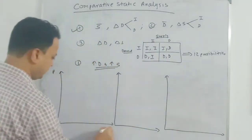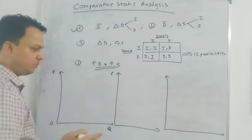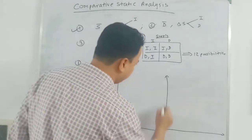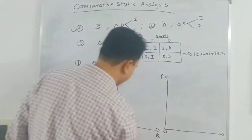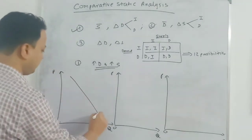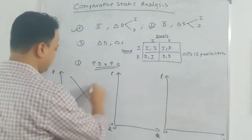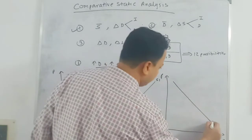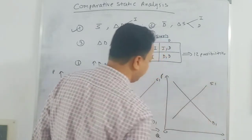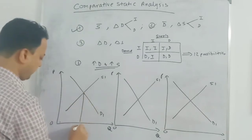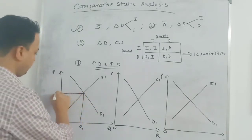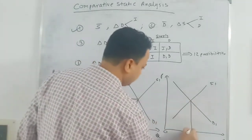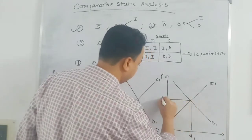Again, drawing the axes: price on the vertical, quantity on the horizontal. D1 is my initial demand, S1 is my initial supply in all three graphs. The initial equilibrium is Q1, P1 in each case. All three graphs start the same — just consider them identical at the initial equilibrium.